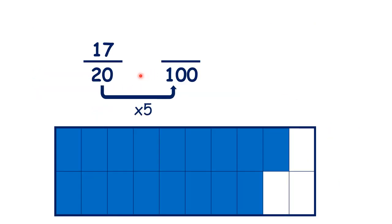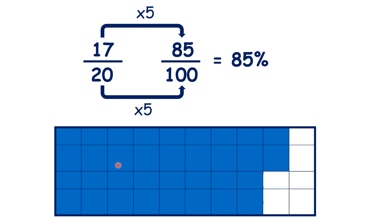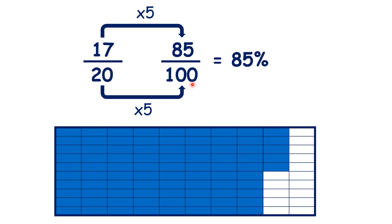So we found our equivalent fraction to get our percentage. As we had 17 out of 20, but wanted our percentage, we needed to find an equivalent fraction with a denominator of 100.